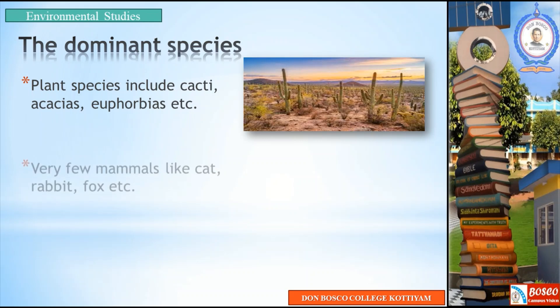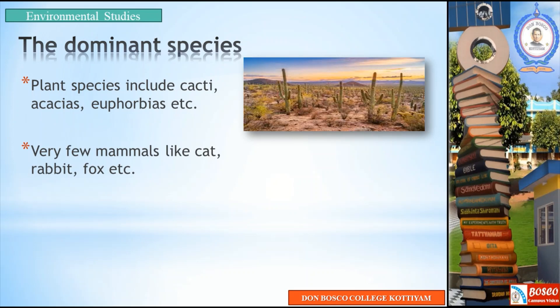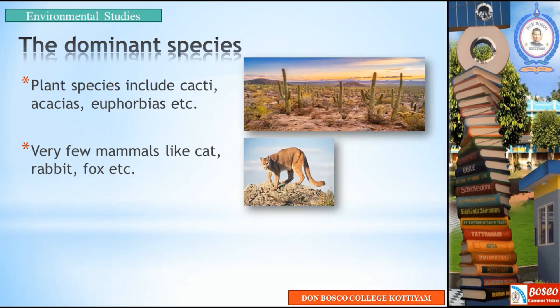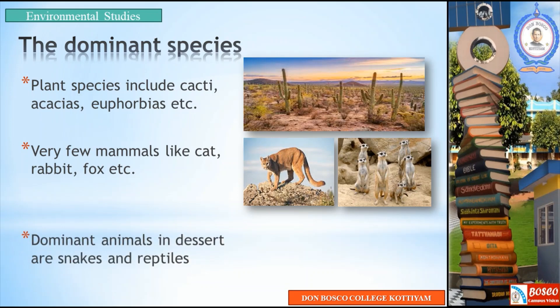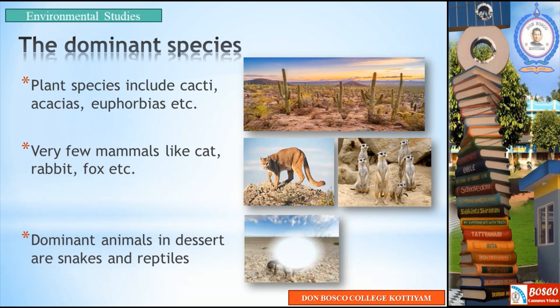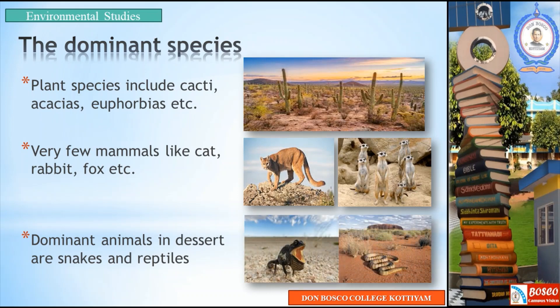Very few mammals like cat, rabbit, fox, etc. are found in the desert ecosystem. Dominant animals in deserts are snakes and reptiles.